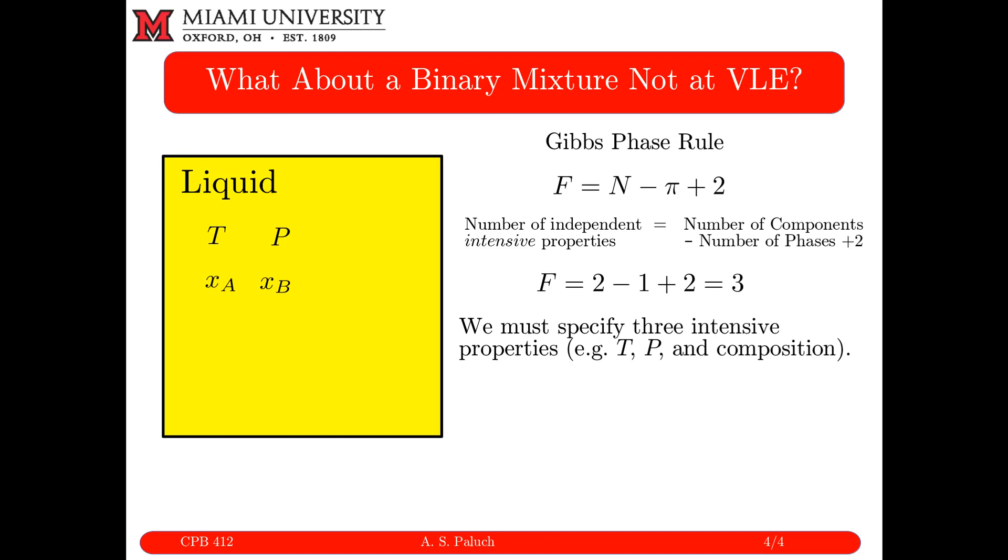If I want to plot the phase behavior of that system, here I have three intensive independent variables. I can't plot that in two dimensions. I could plot it in three dimensions where I have temperature versus pressure versus composition, but then that becomes a little intractable or not very realistic in terms of problems that we actually want to solve.